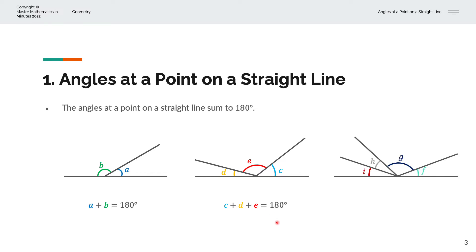In a case with four lines and four angles — angles f, g, h, and i — the sum of these, f plus g plus h plus i, is equal to 180 degrees.